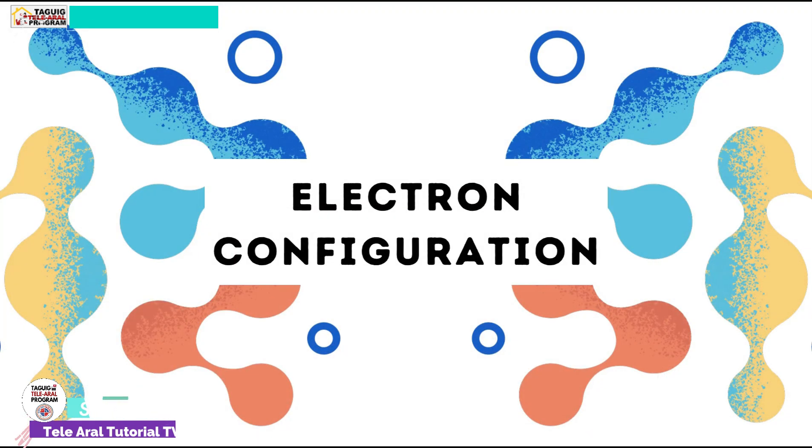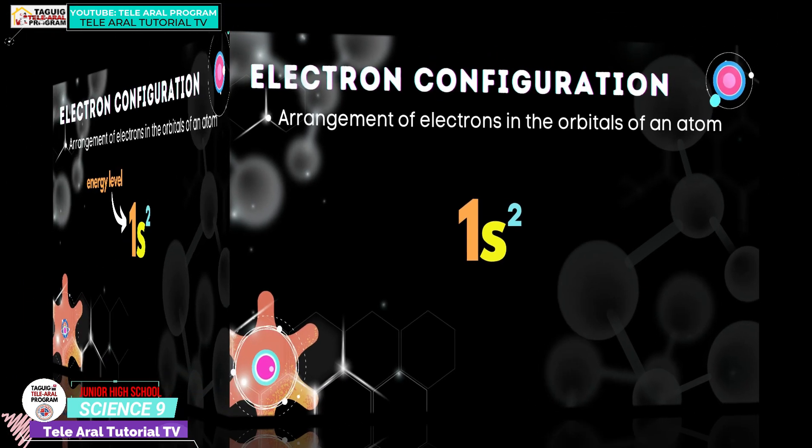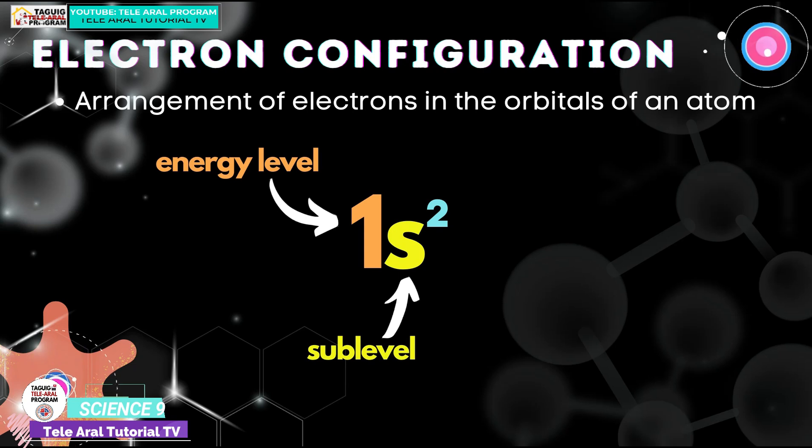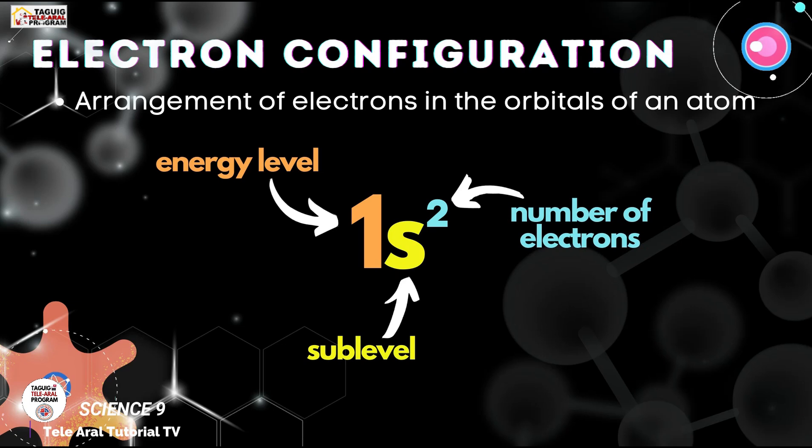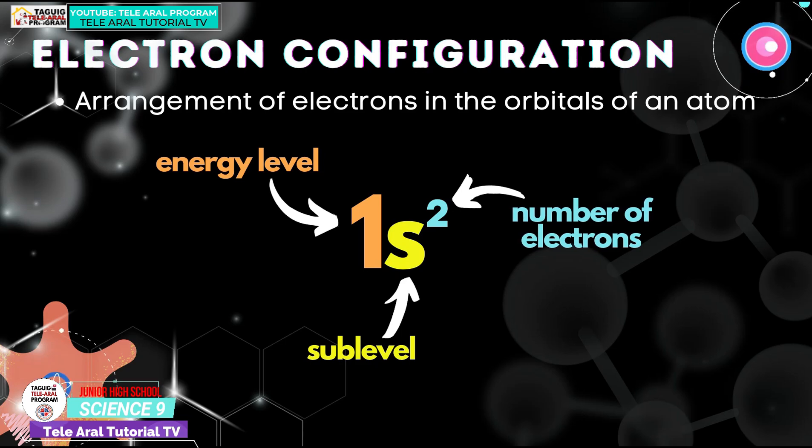Let us now apply the concept of the energy levels, sublevels, and orbitals in writing the electron configuration. Electron configuration is the arrangement of electrons in the orbital of an atom. This is how we write the electron configuration. It contains the principal energy level, the sublevel, in this case is S, and the number of electrons per sublevel. But in writing the electron configuration, we must follow the three rules.